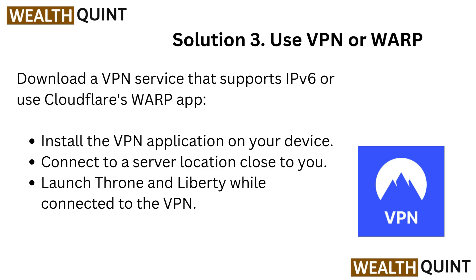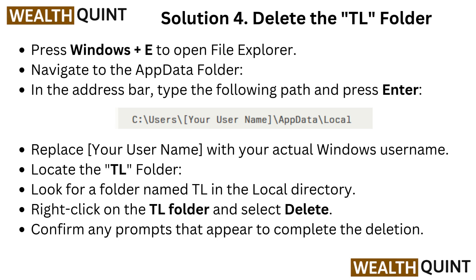Launch Throne and Liberty while connected to the VPN. Solution 4: Delete the TL folder. Press Windows + E to open File Explorer and navigate to the AppData folder. In the address bar, type the following path and press Enter: C:\Users\[YourUsername]\AppData\Local. Replace 'YourUsername' with your actual Windows username. Locate the TL folder in the Local directory, right-click it, select Delete, and confirm any prompts to complete the deletion.